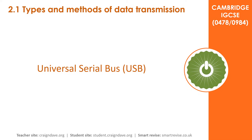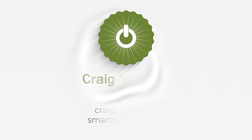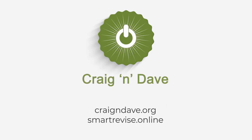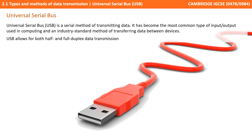In this video we discuss the Universal Serial Bus, or USB for short. USB is a form of transmitting data in a serial manner. It has become the most common type of input and output found on most home computers, leading to a standard method being developed for transferring data between devices.